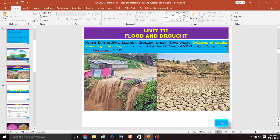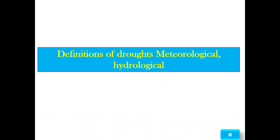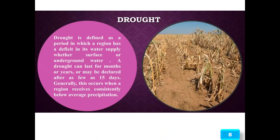Good morning. Today we are going to discuss Unit 3, which covers flood and drought. The course outcome of this topic is that upon successful completion, students will be able to assess flood and drought risk in terms of hazards and vulnerability, and analyze measures for mitigating and managing such risk. This is correlated with program outcomes 2, 3, 6, 7 and program specific outcome 1.